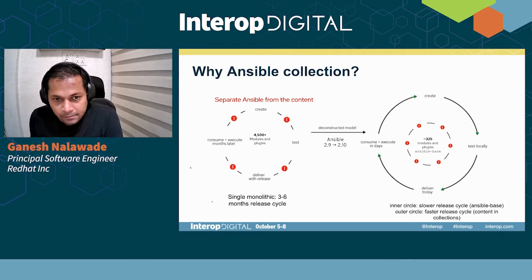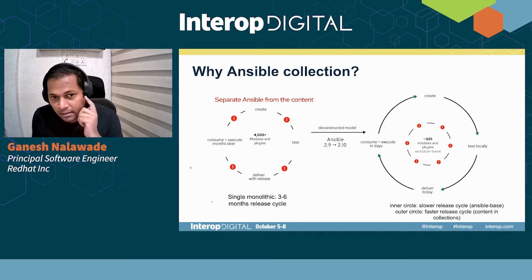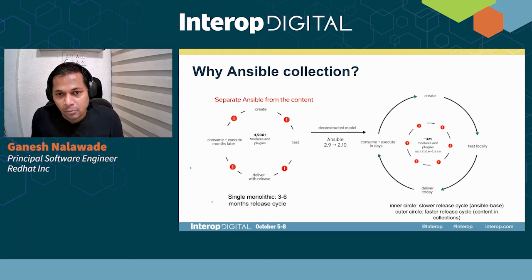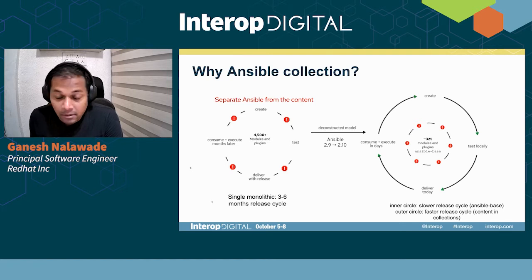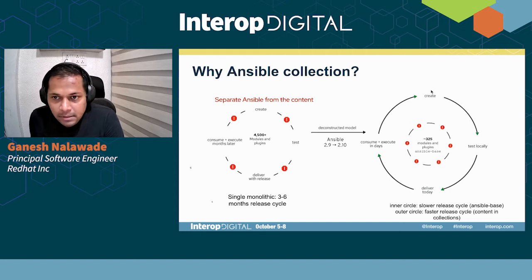The requirements for Ansible Content and Ansible Base were different. Ansible Base became stable over time and required fewer releases per year, whereas users wanted to consume Ansible Content at a much faster rate. So in 2.10 we moved toward a deconstructed model where Ansible Base, along with a couple of modules and plugins required for bootstrap, formed the Ansible engine, and all the content was moved into individual collections. The outer cycle represents a faster release cycle and the inner circle a slower one — Ansible Base is analogous to a kernel and the outer circle to various packages.